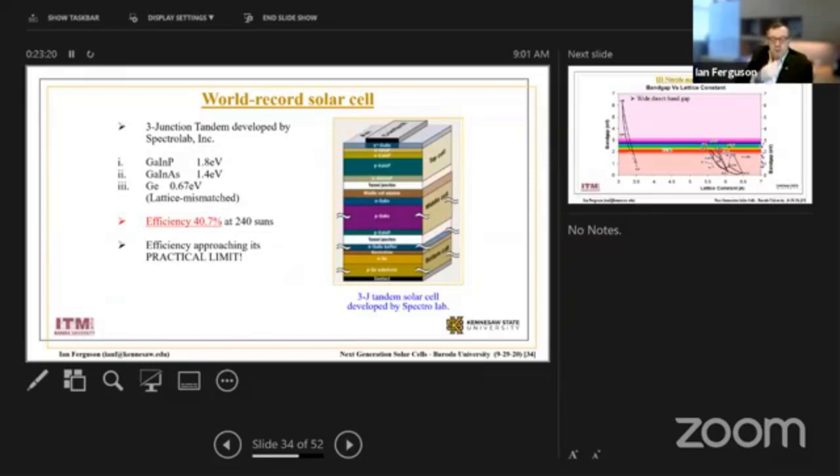So this time this was a three junction cell, we've now gone up to four junctions, and some of our work we go up to about 42%, and you can see this is at 240 suns, so that means that this was a concentrated light that was on top of the cell.